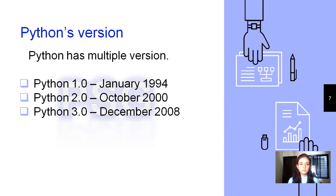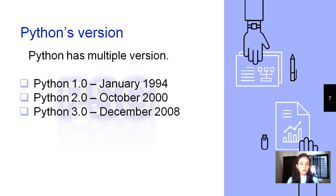There are various multiple versions of Python available: Python 1.x version, Python 2.x version, and Python 3.x version. Since Python 3.x version is the latest version since December 2008, we will be using the Python 3.x version. The data science related libraries are present in the Python 3.x version only, so we will be using Python 3.x for our implementation.